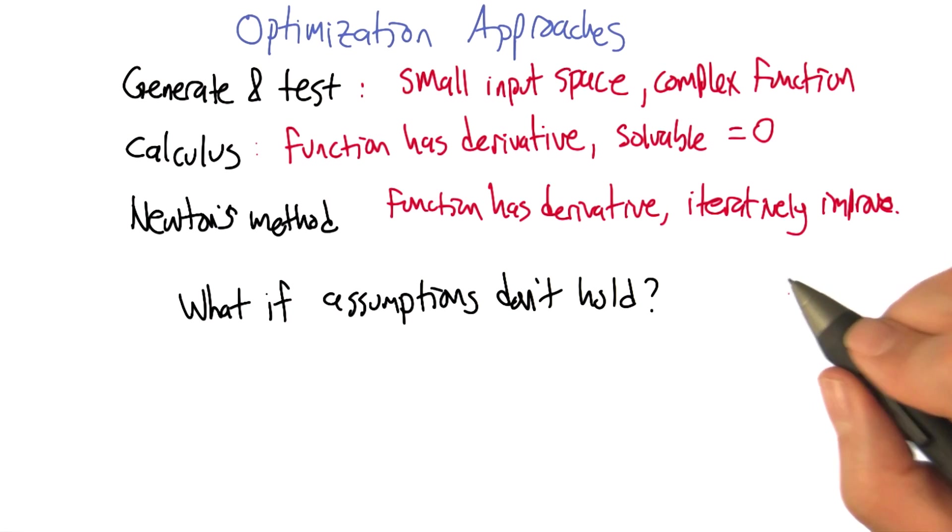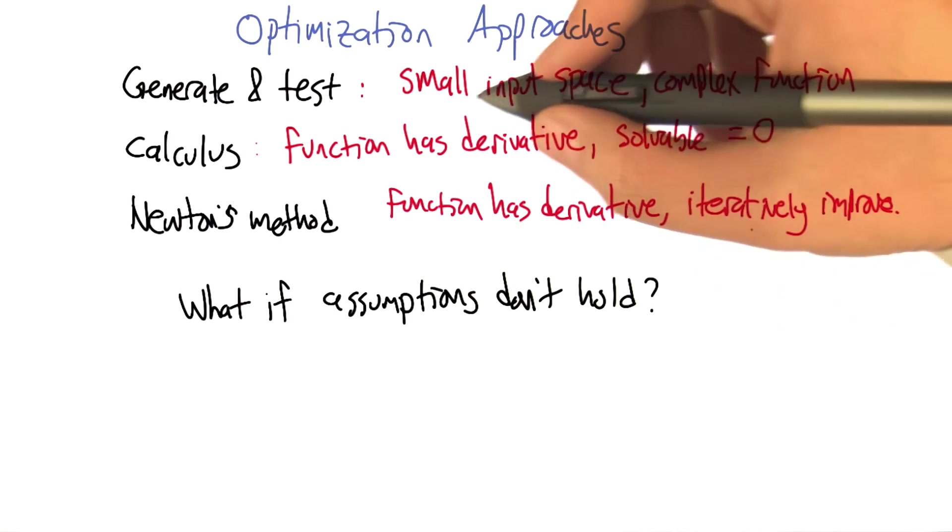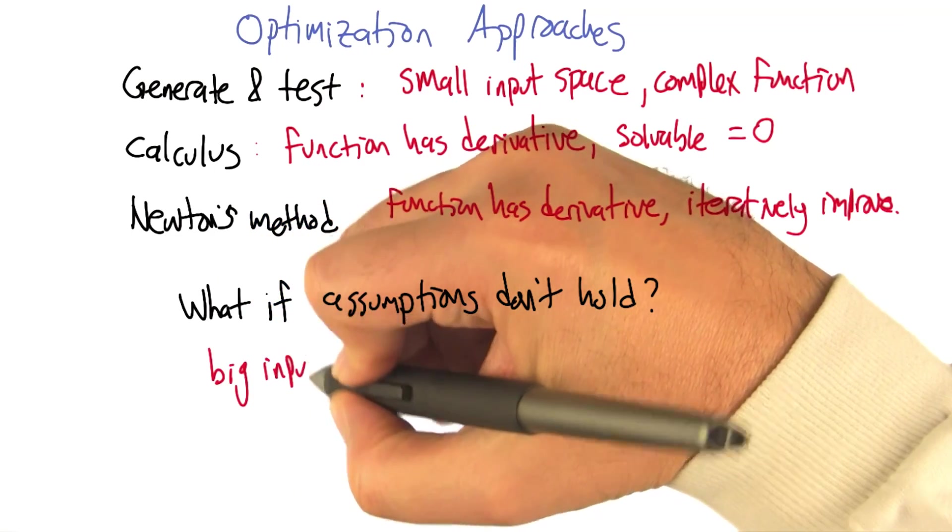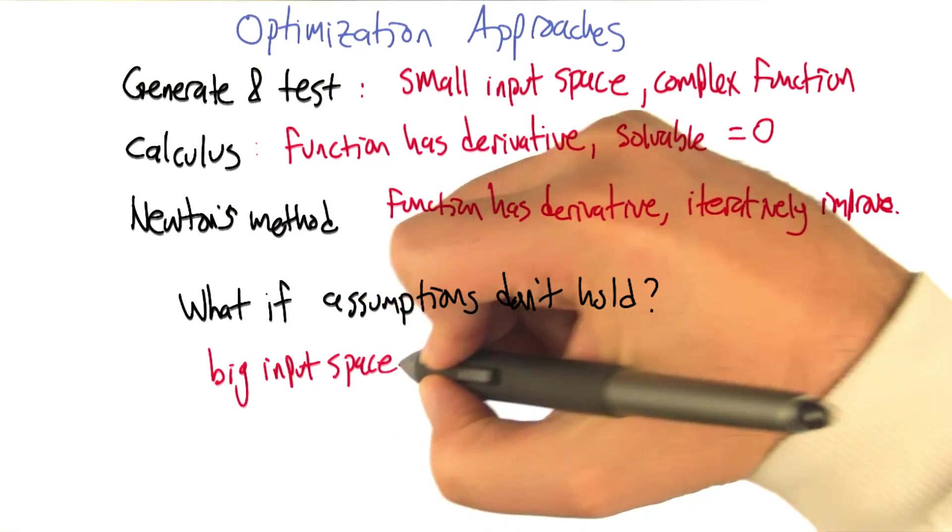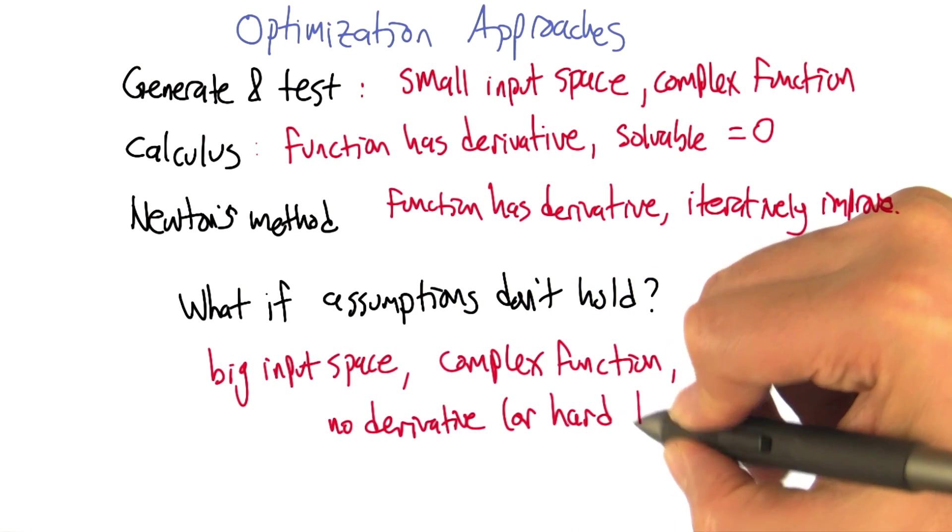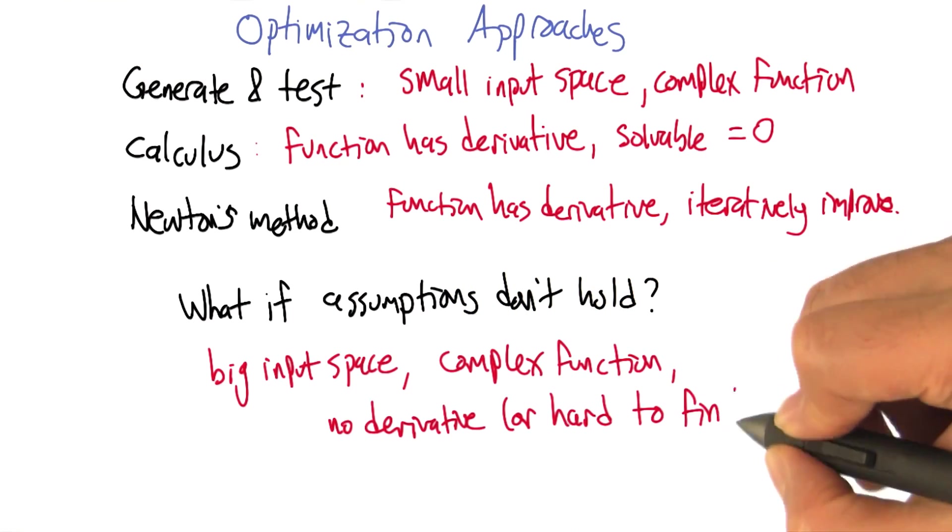So okay, but then what do we do if these assumptions don't hold? It would mean big input space, still have a complex function, no derivative or difficult to find derivative.